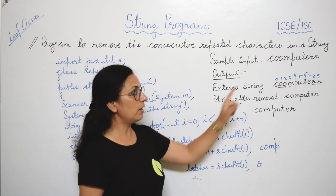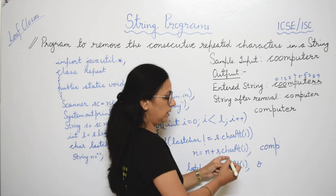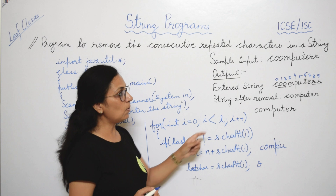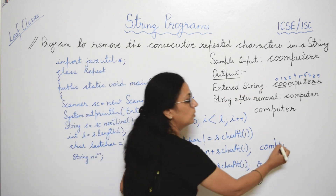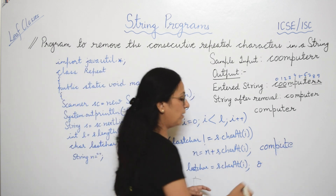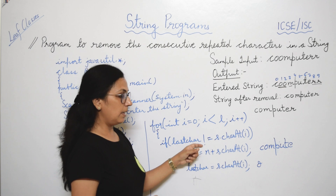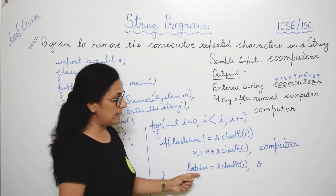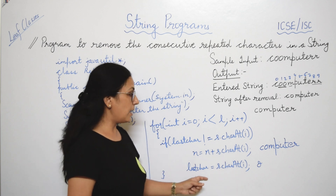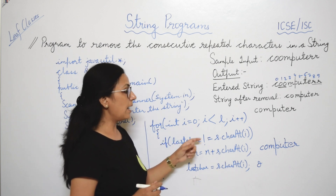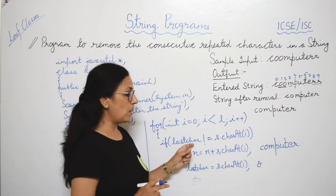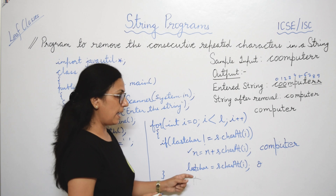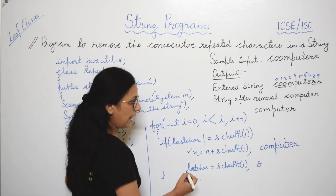lastChar becomes 'p', then 'u'. i=6, 'u' and s.charAt(6) which is 't' are not equal, so 't' is added. Similarly 'e' is added. Now lastChar is 'e', s.charAt(8) is 'r' — not equal, so 'r' is added. lastChar becomes 'r'. Now i=9, lastChar is 'r' and s.charAt(9) is also 'r'. 'r' is not equal to 'r' — condition is false — so the second 'r' is not added. The loop ends.